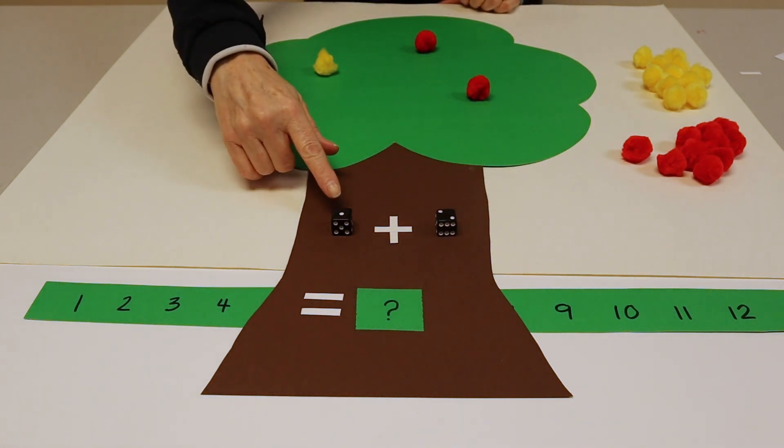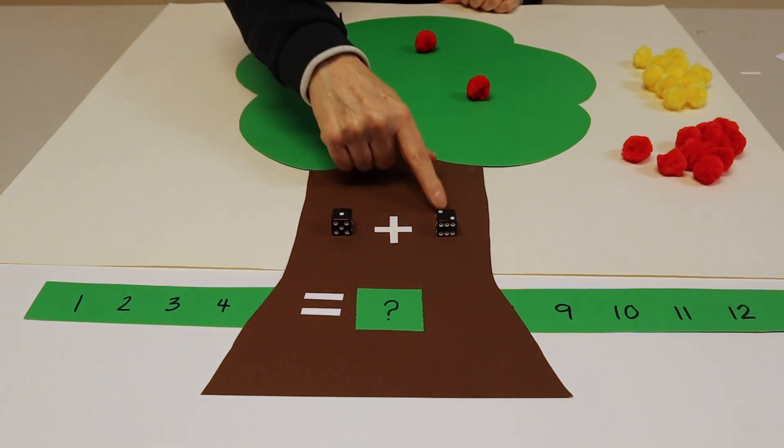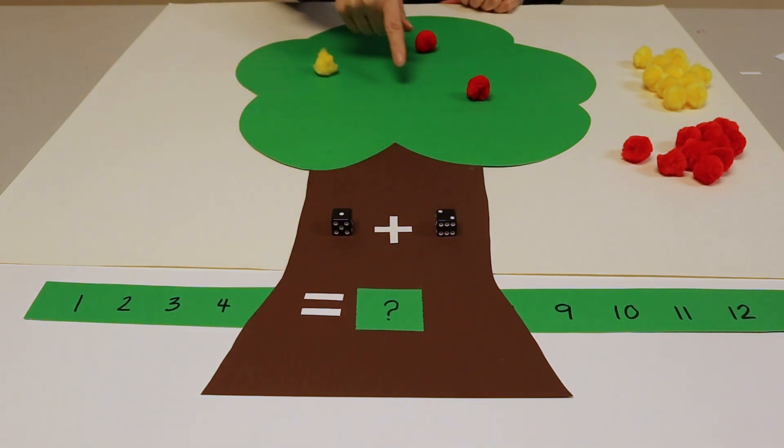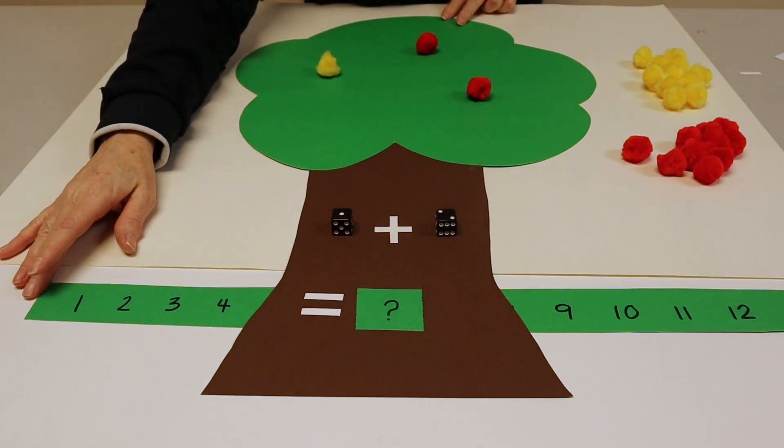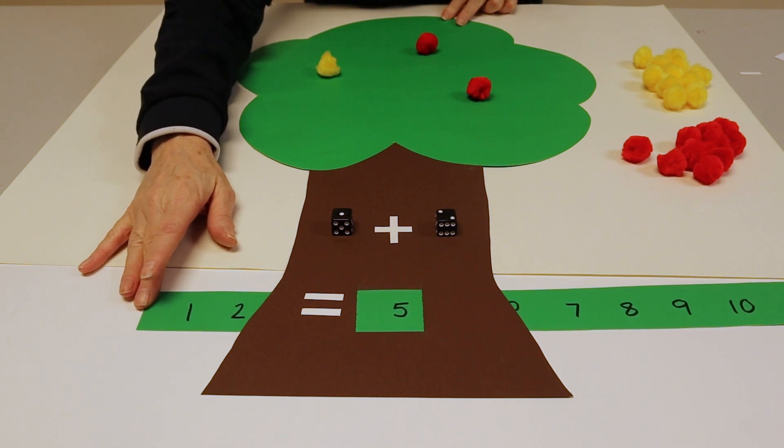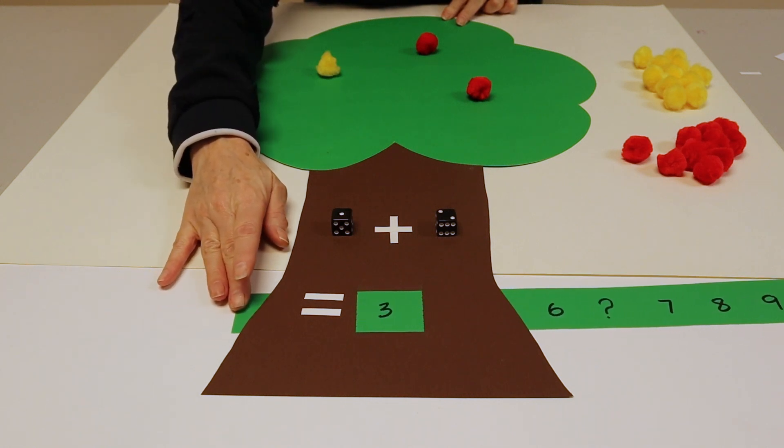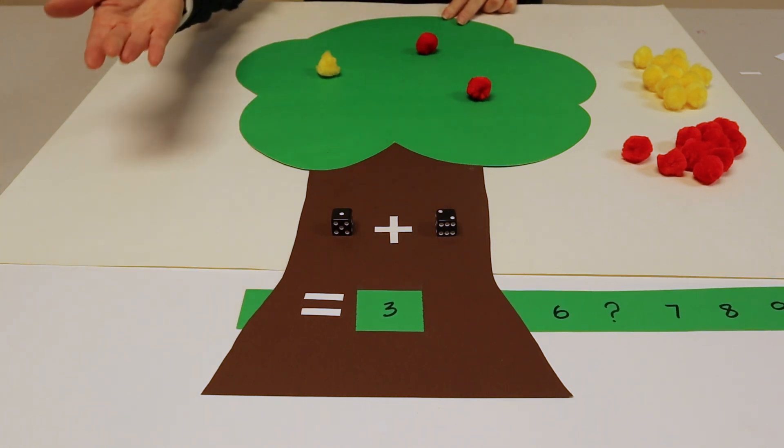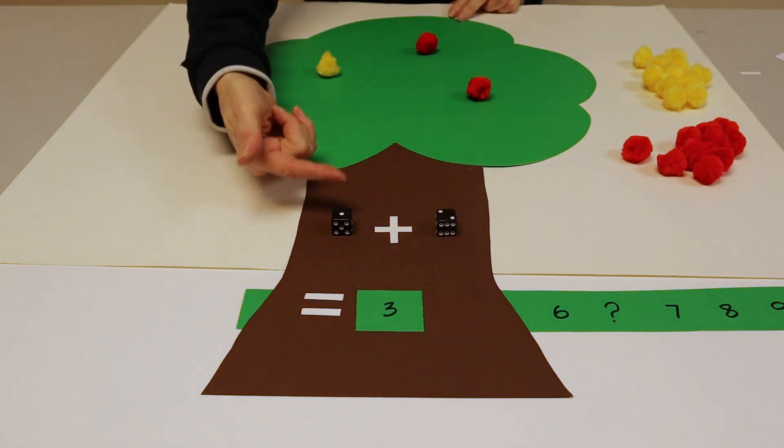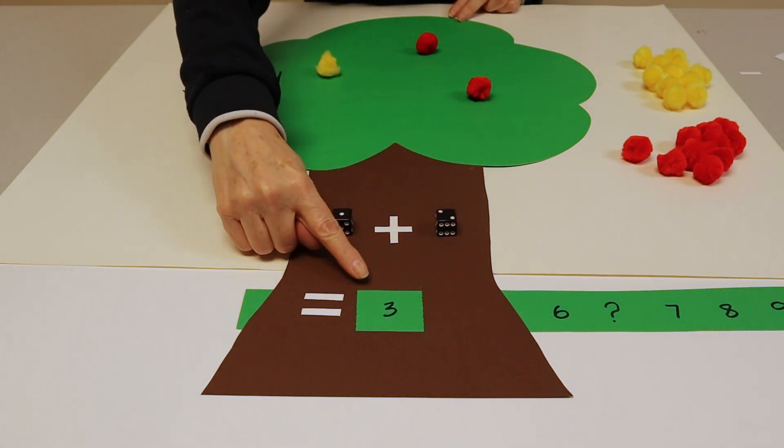So together read out the equation one plus two equals and your little one can count the number of apples one, two, three and then using the number strip find the number three. There we go and it's good to repeat the equation again. So one plus two equals three.